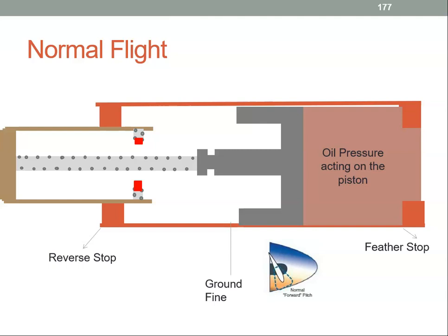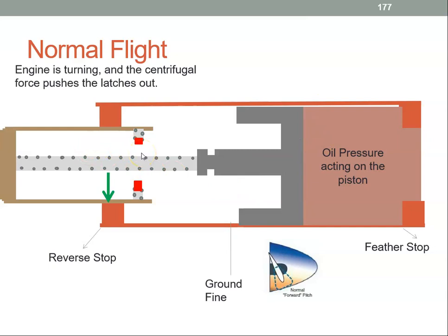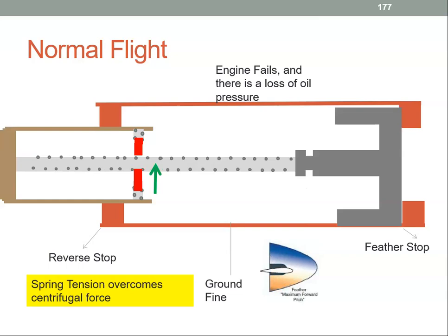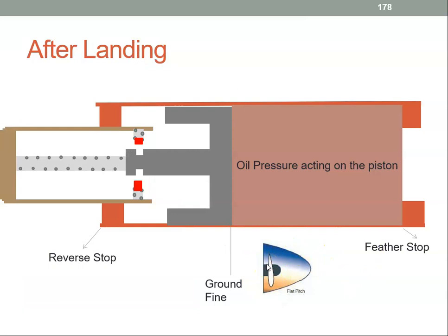Here I have a propeller, and it's in flight. This is the piston that's changing the prop pitch, this is the oil pressure, and these are the start latches. When we're in normal flight, the propeller is turning and there's centrifugal force acting on the start latches, pushing them out. Now let's assume the engine fails in flight. There'll be a loss of oil pressure, the feathering valve will open, and the feathering spring will push the piston all the way back to the feathering stop. The propeller is now in the feather position — that's what we want.